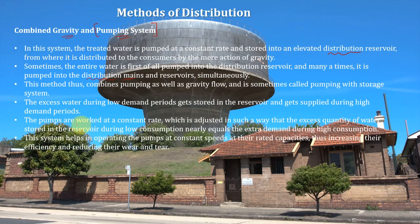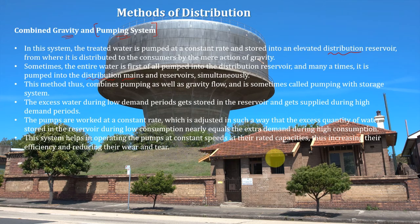The pumps are worked at a constant rate, adjusted such that the excess quantity of water stored in the reservoir during low consumption nearly equals the extra demand during high consumption. This system helps in operating the pump at constant speed at rated capacities, thus increasing efficiency and reducing wear and tear. If the pump is operating only at constant speed, it will reduce wear and tear on the pump as well.